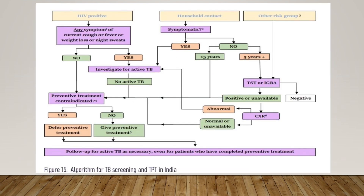For TPT screening, if you have any HIV-positive patient who comes with symptoms of cough, fever, weight loss, or night sweats — which can also be part of HIV disease — investigate for active TB. If it is not active TB, every HIV-positive patient will go on to preventive therapy if there is no contraindication. Contraindications include hepatitis — you cannot give INH — and peripheral neuropathy. If there is a contraindication you defer preventive therapy; if not, give TPT.